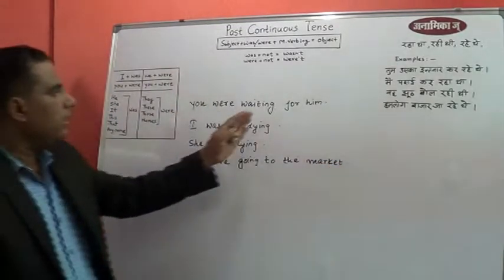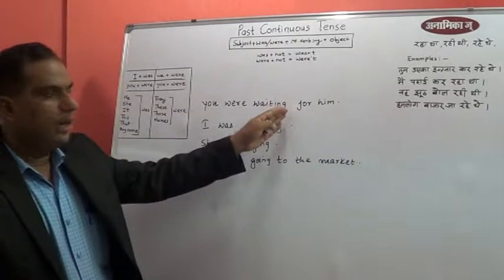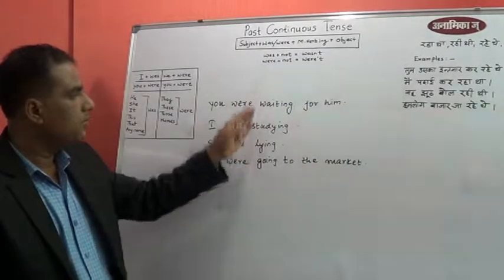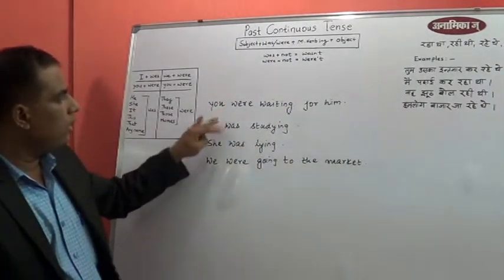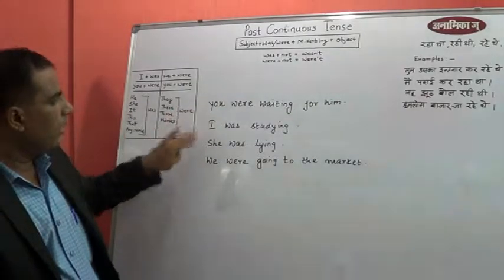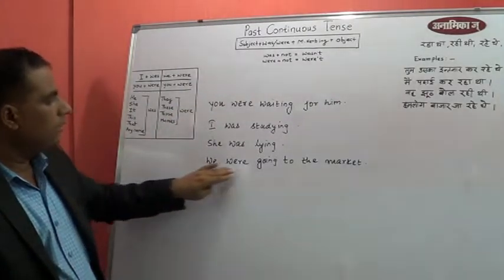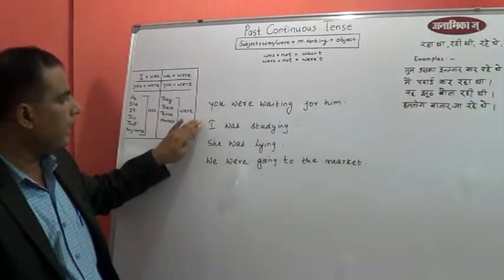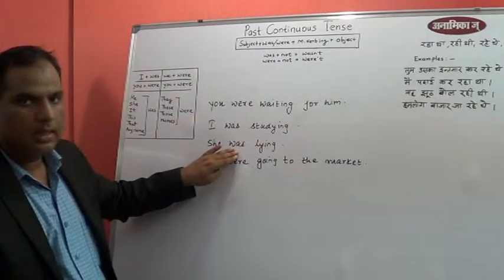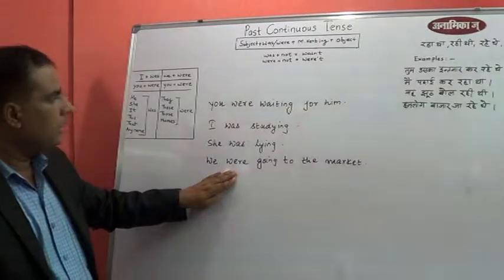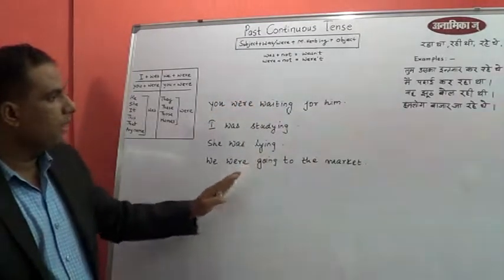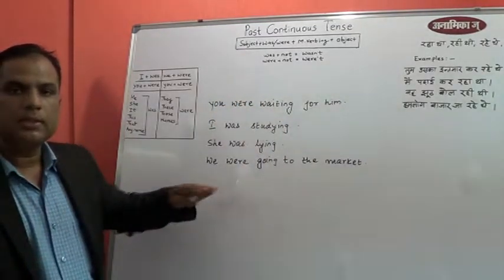So here we have seen that the verb has always come with -ing in all these four sentences. 'Was' and 'were' changed depending on the subject — for 'you' and 'we', 'were' has been used; for 'I' and 'she', 'was' has come. That is the only care we need to take; otherwise it is very similar to the present continuous.